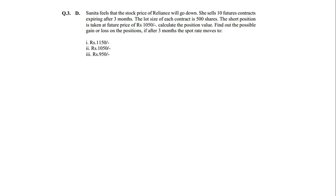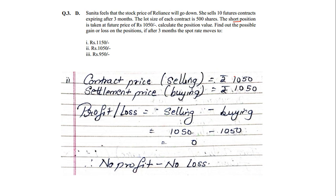In the second part, the contract price is again selling at 1050. The buying price is now also 1050. Profit or loss = selling price − buying price = 1050 − 1050 = 0. Therefore there is no profit, no loss in this case. It is an equilibrium rate.